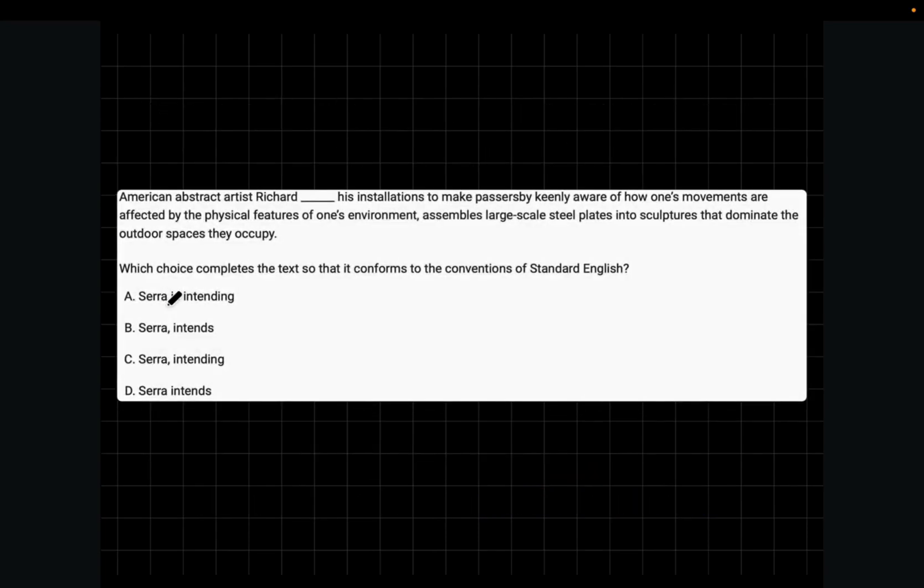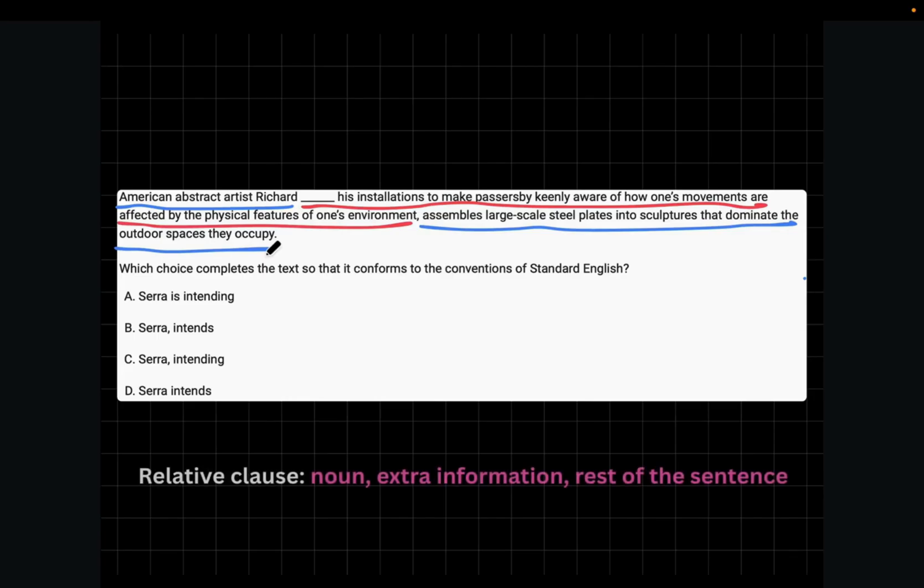The next tense rule is also commonly used. However, there are lots of students that get tricked by the question format and therefore get the question wrong. Let's see a question. American abstract artist Richard Serra blank. His installation is to make passersby keenly aware of how one's movements are affected by the physical features of one's environment. Assembles large-scale steel plates into sculptures that dominate the outdoor spaces they occupy. You might have noticed that this middle part is actually extra. So if you try to read the text again without that middle part, it will naturally flow and it will still make sense.